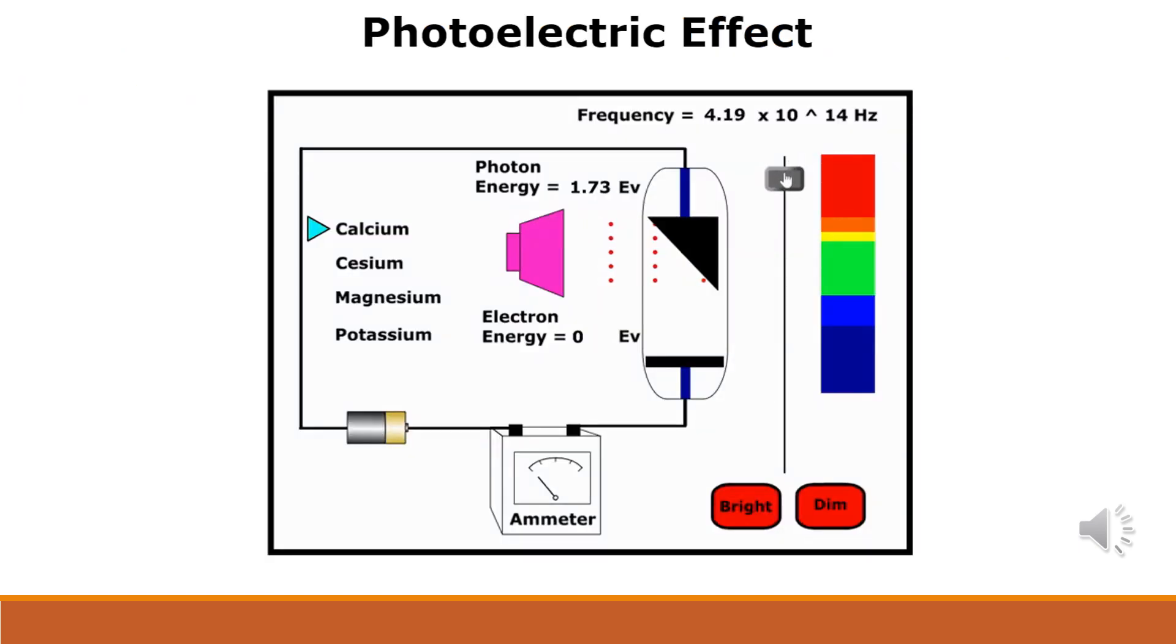Whenever the photoelectric experiment was performed, scientists noticed that the metal used would not eject electrons until the source of the electromagnetic radiation was above a certain frequency. This frequency was called the threshold frequency. If your light source was below the threshold frequency, no matter how bright you made the source, no electrons were emitted from the metal. Since the brightness of a light source was long associated with the energy of the light, these observations seemed to contradict everything physicists knew about light.